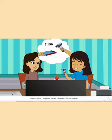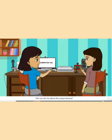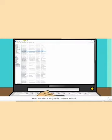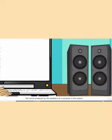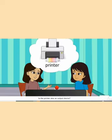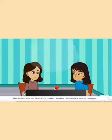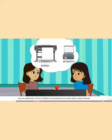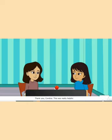In return, the computer shows the price of the product. Speakers are an example of an output device — when you select a sound on the computer as input, the sound produced by the speakers is the output. A printer is also an output device — when we input data into the computer, it prints the text or pictures on paper as output. Plotters and projectors are some other output devices.